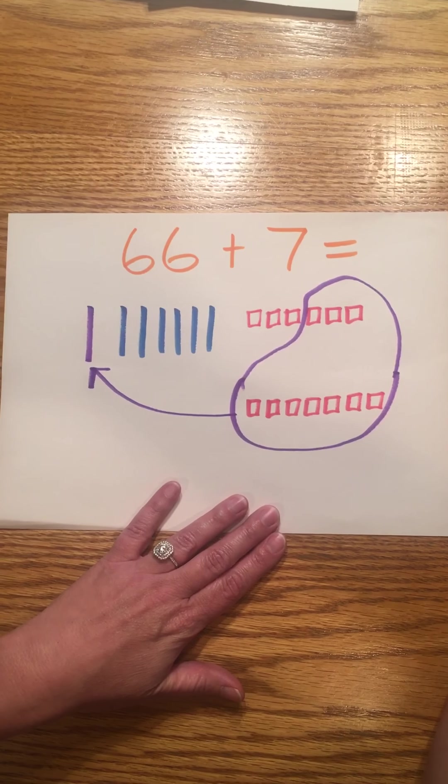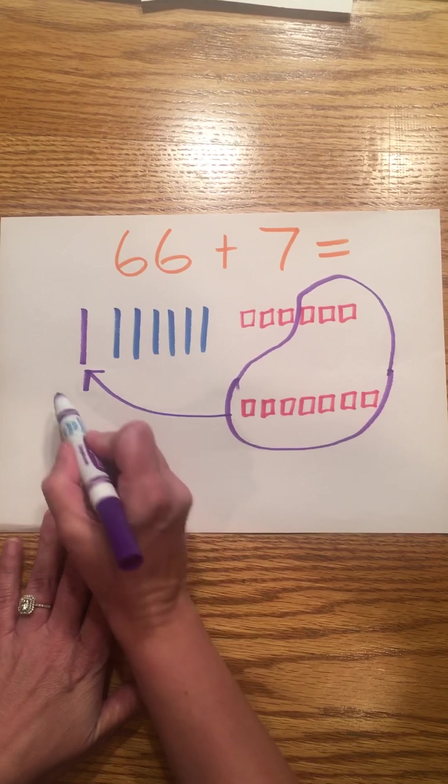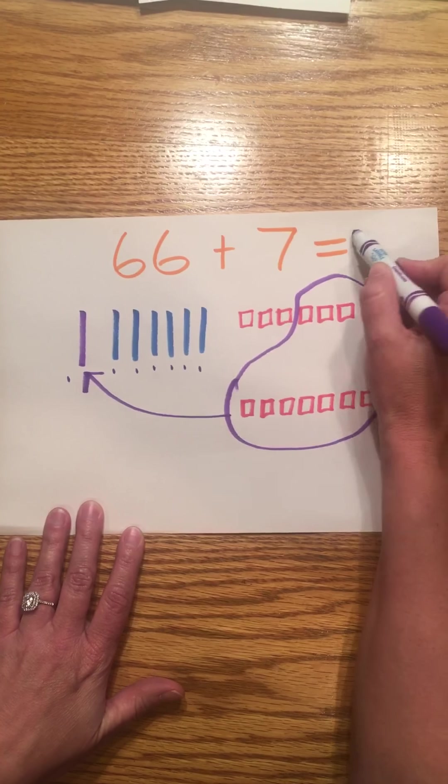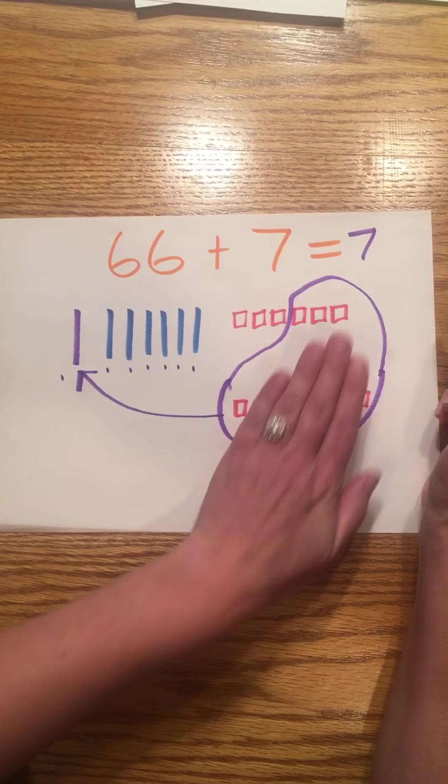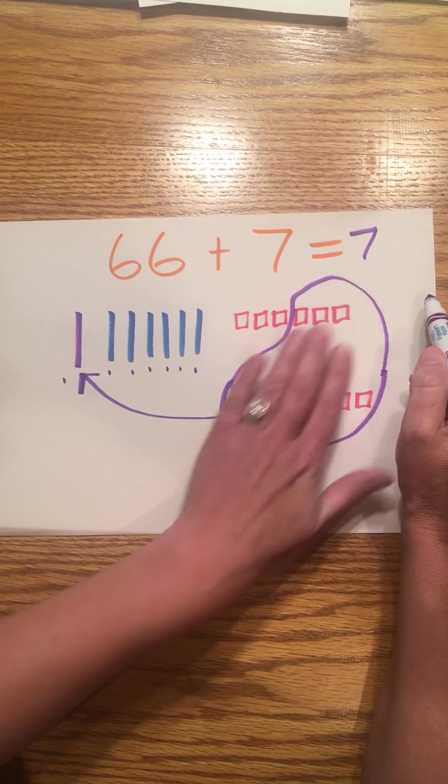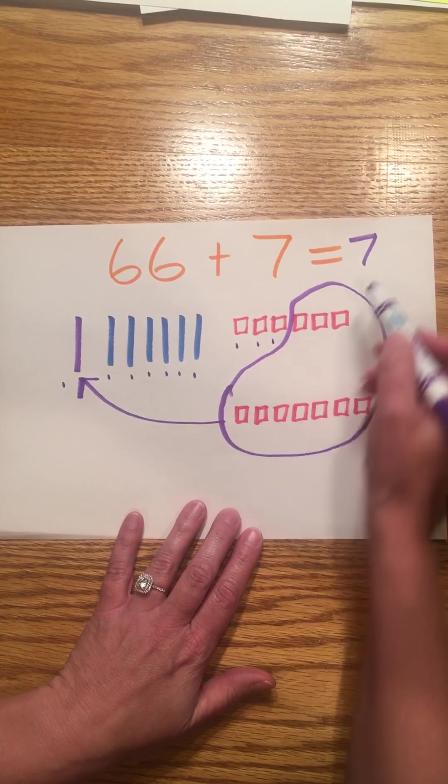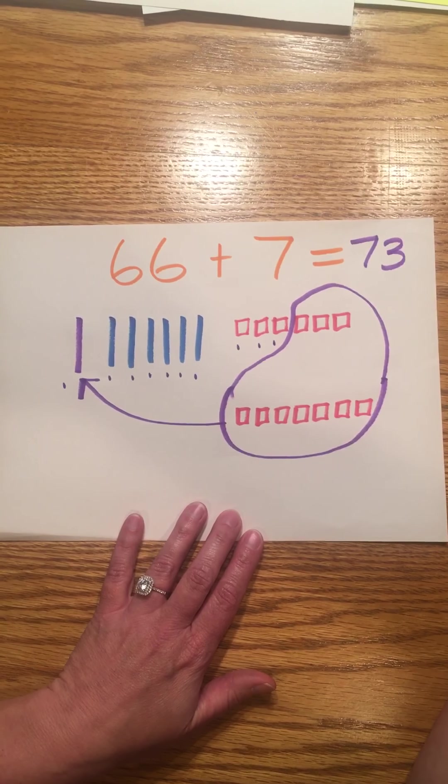And I will trade those ten ones for a ten. And now I will count how many tens I have. One, two, three, four, five, six, seven. I have seven tens. I do not count these ones because I traded them for my ten. And I have one, two, three, three ones left over.